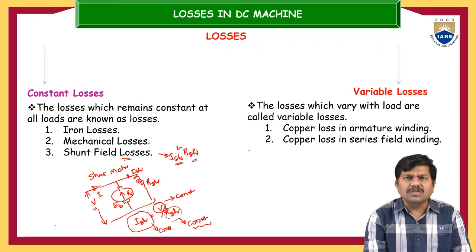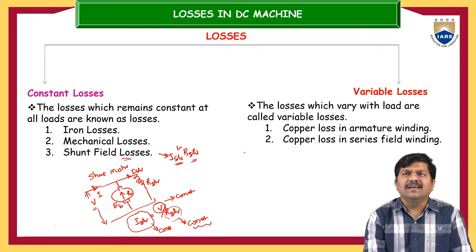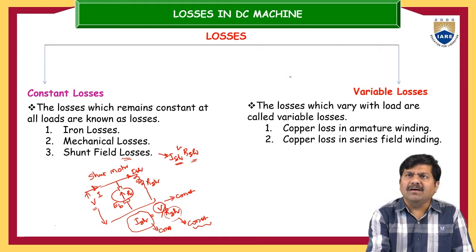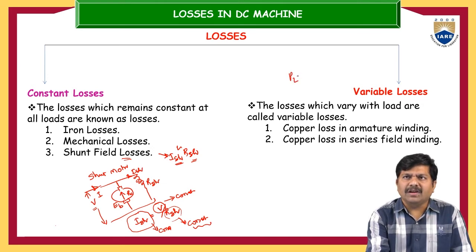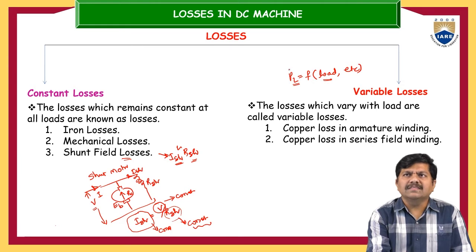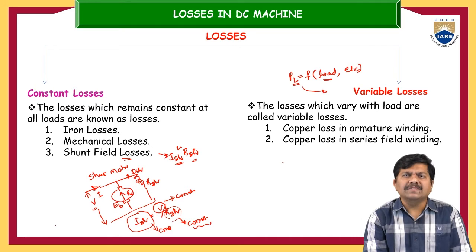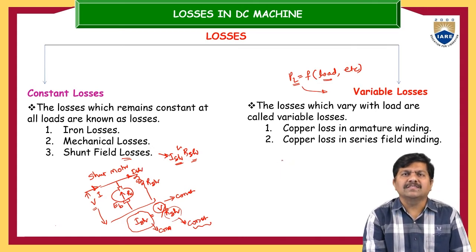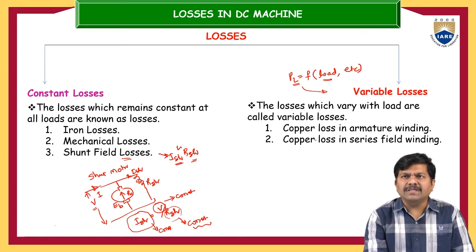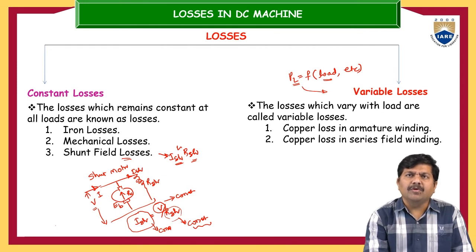Variable losses are losses which vary with the load. If power loss PL is a function of load, and if load varies, proportionally the losses will also vary — those are variable losses. Variable losses depend on loading conditions: if the load increases from 10% to 20%, proportionally the losses also vary. The best examples of variable losses are copper losses occurring in the armature winding and copper losses occurring in the series field winding.